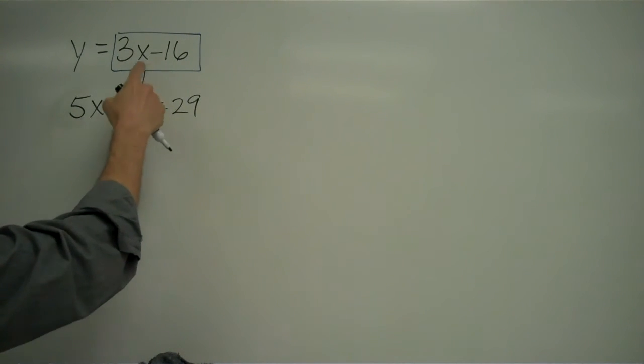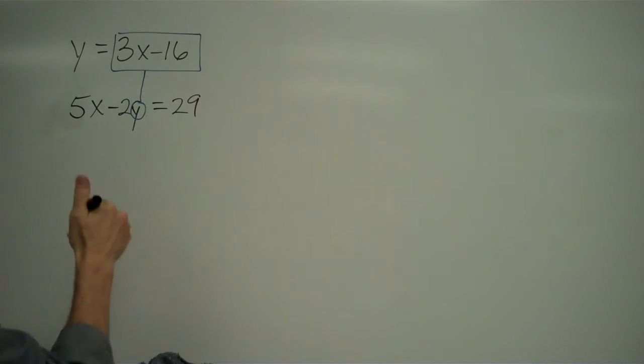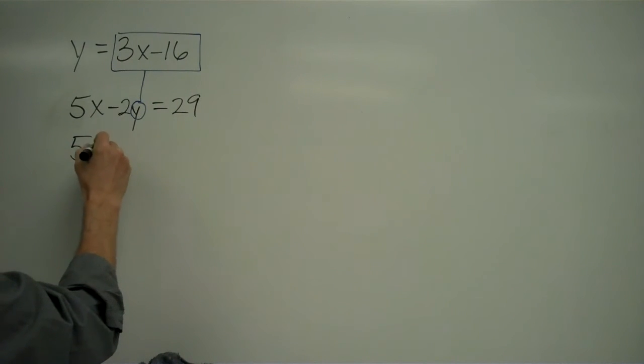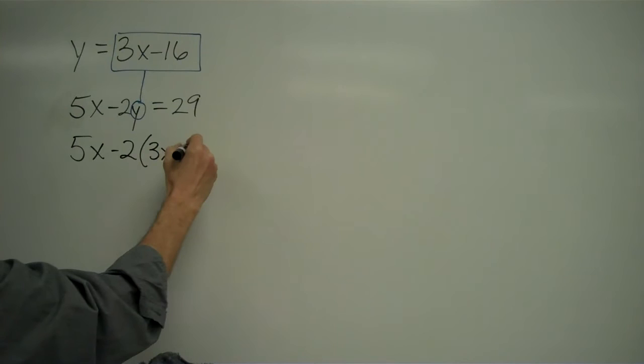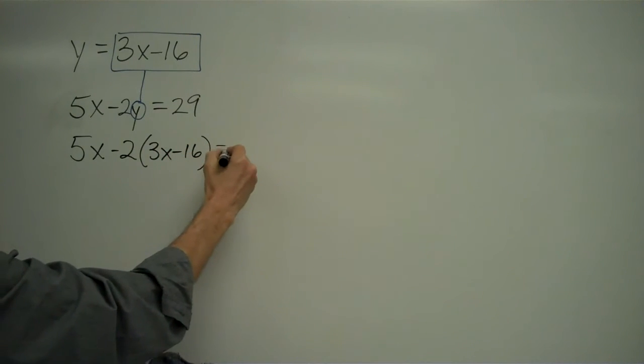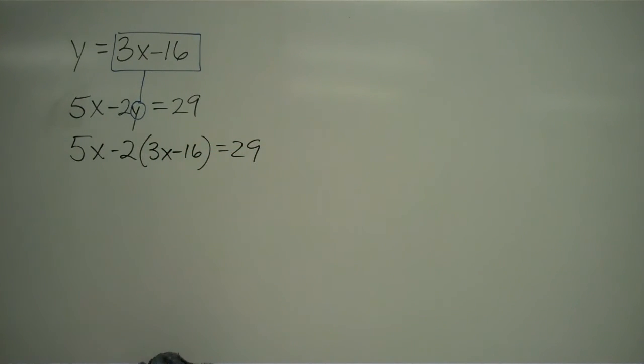I can replace y with 3x minus 16 to get 5x minus 2 times (3x minus 16) equals 29. Now what I have is one equation with one unknown, and that I know how to do.